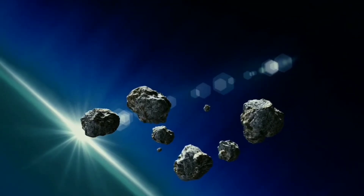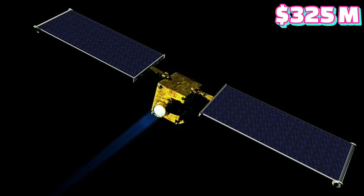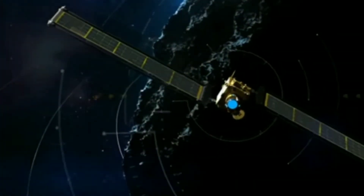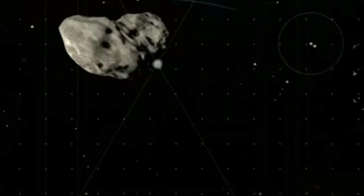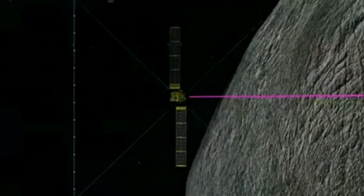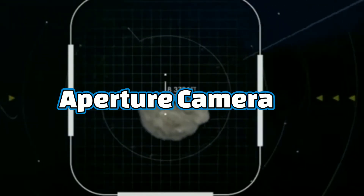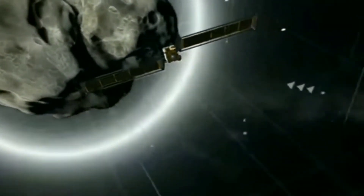The crashed spacecraft was a $325 million craft weighing up to 610 kilograms, or 1,300 pounds. It was equipped with an auto-navigation software to navigate the spacecraft towards the asteroid after the team had lost control due to distance. The second piece of equipment was a 20-centimeter aperture camera for recording the impact. The footage you saw at the beginning was recorded by this camera.